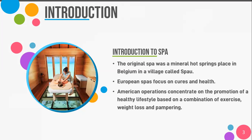You can see there are two different things about European spa and American spa. When we talk about European spa, it focuses more on cure and health purposes — curing stress, high blood pressure, obesity, that kind of thing. But when we talk about American spa, it is more emphasized on the promotion of a healthy lifestyle based on a combination of exercise, weight loss, and pampering. American spa is more like a gym kind of operation. Therefore, there is a very significant difference between European and American spa.